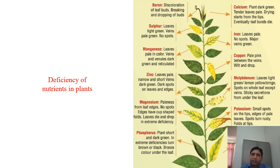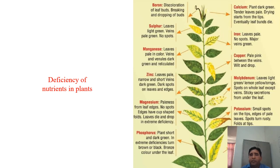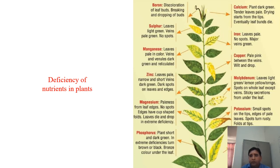If a particular nutrient is not present in sufficient quantity in the plant, it produces recognizable symptoms, and the required nutrient can then be provided to the plant for successful completion of its life cycle. For example, with phosphorus deficiency, the plant turns dark green, and in extreme deficiency turns brown or black with bronze coloration on the underside of the leaf. Phosphorus is not a very mobile nutrient like nitrogen.